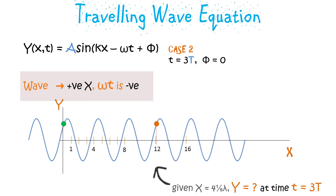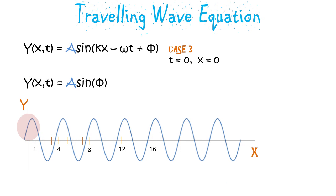In some other places you may find the equation written as omega t minus kx, and it is exactly the same thing. Phi is the initial phase difference, and when we set t equal to zero and x equal to zero we get the value of y depending on the initial phase difference. This concept of phase difference is useful when looking at two waves, as the phase difference between them can make a big difference when they are interfering or interacting with each other.